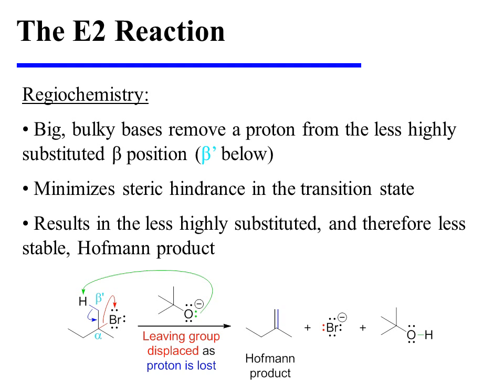In this specific example, tert-butoxide is a big, bulky base. It cannot reach the more highly substituted beta position, like methoxide could. Instead, it removes a proton from the less highly substituted beta prime position. As electrons collapse in between alpha and beta, bromide is displaced, and the less highly substituted Hoffman product results.